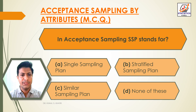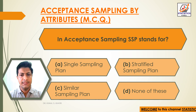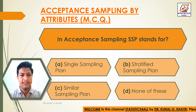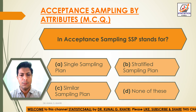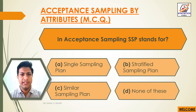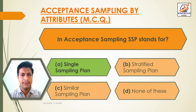Question 8: In acceptance sampling, SSP stands for — Option A: Single sampling plan. Option B: Certified sampling plan. Option C: Similar sampling plan. Option D: None of these. The answer is Option A — Single sampling plan is the full form of SSP in acceptance sampling.